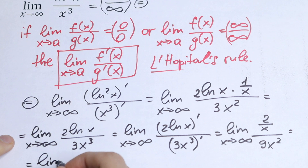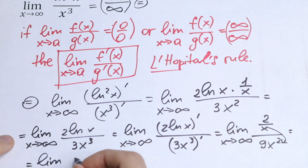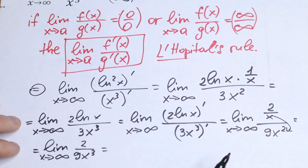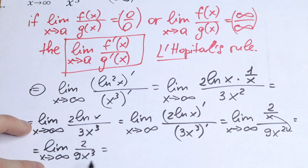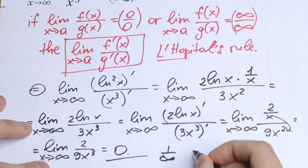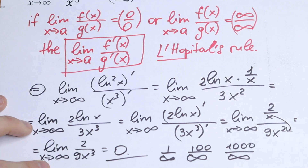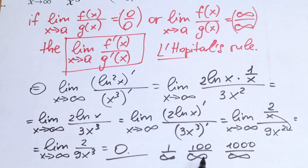We can simplify this before direct substitution: 2/x divided by 9x² gives us 2 over 9x³. Now using direct substitution as x approaches infinity, we have 2 over infinity. Any constant divided by infinity equals 0 — whether it's 1/∞, 100/∞, or 1000/∞, the result is always 0.